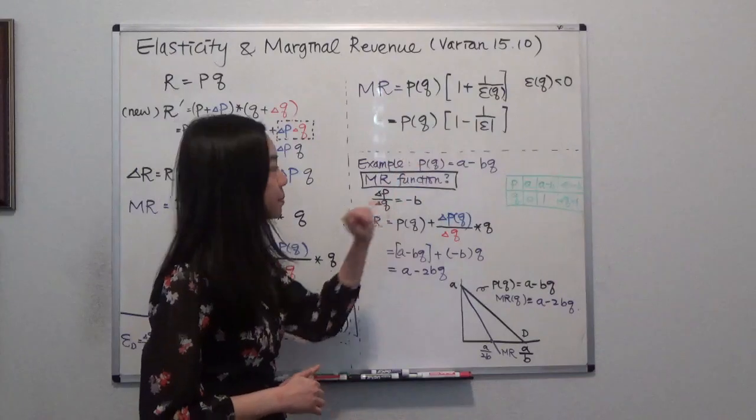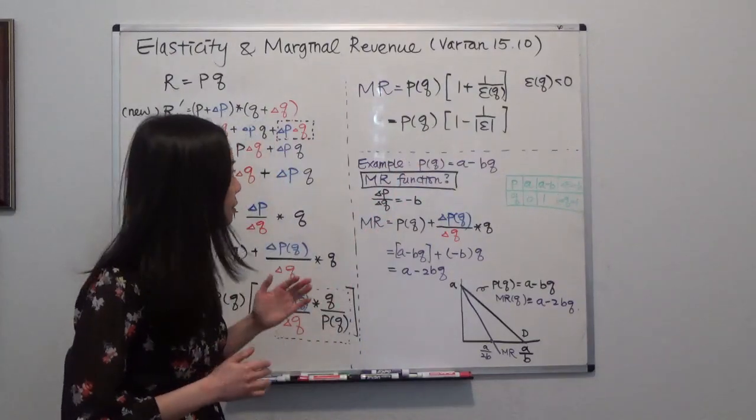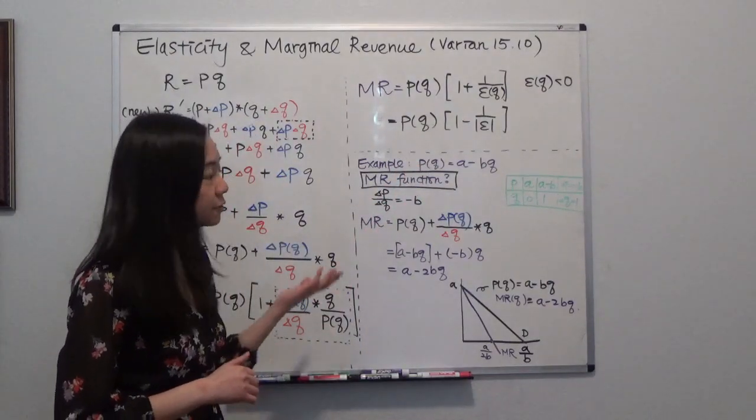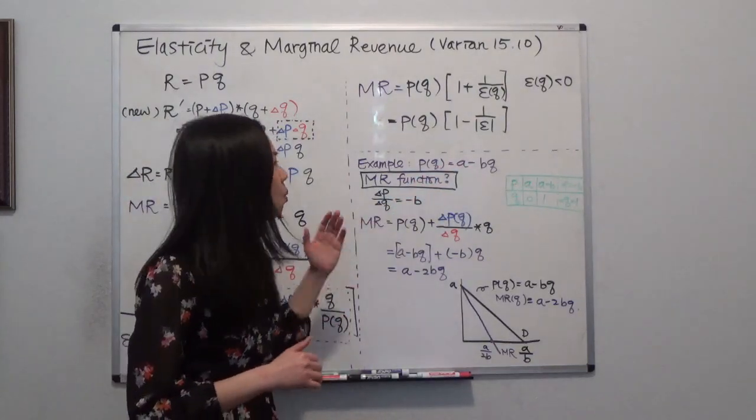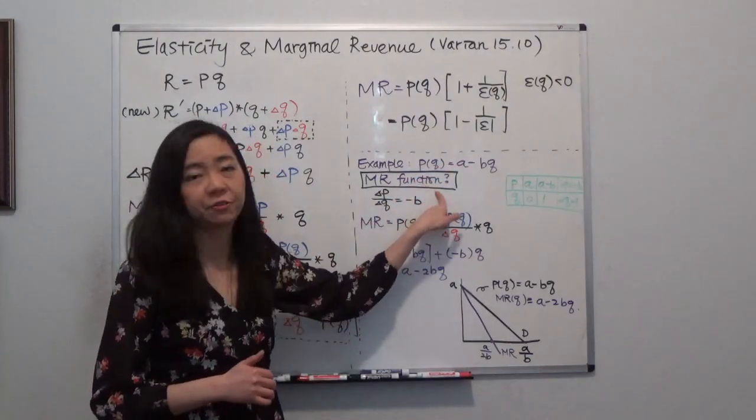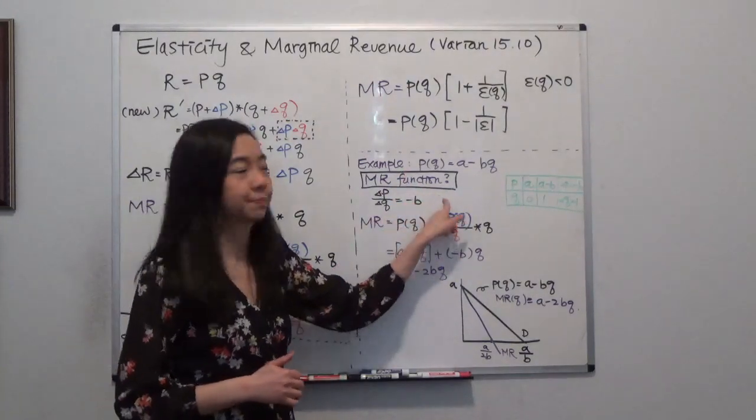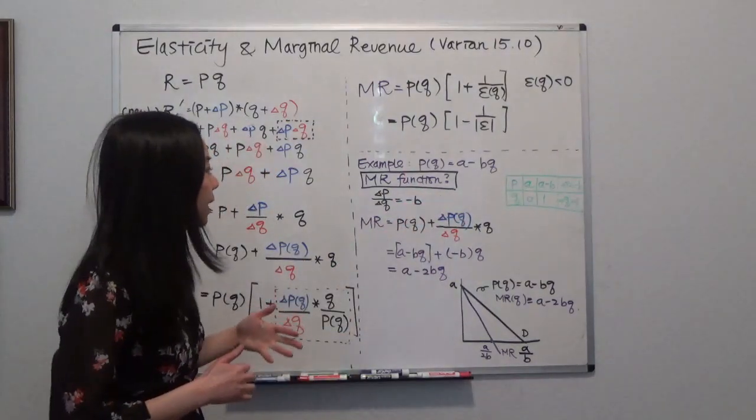Now, there's an implication. If I have a price function, price as a function of the quantity, what is my marginal revenue function? I will be able to find it. So how do I do that?